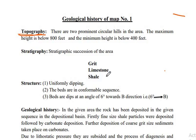Structure: the beds are uniformly dipping and in conformable sequence. The dip of the beds is 6 degrees towards the B direction of the axis — that is, 6 degrees towards the B direction of the given geological map.